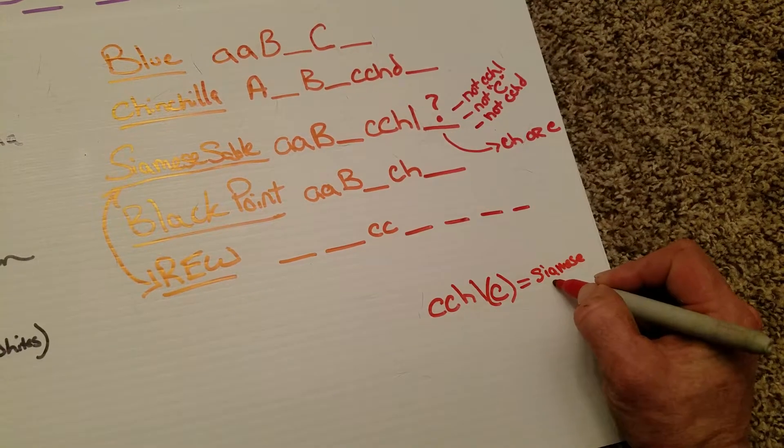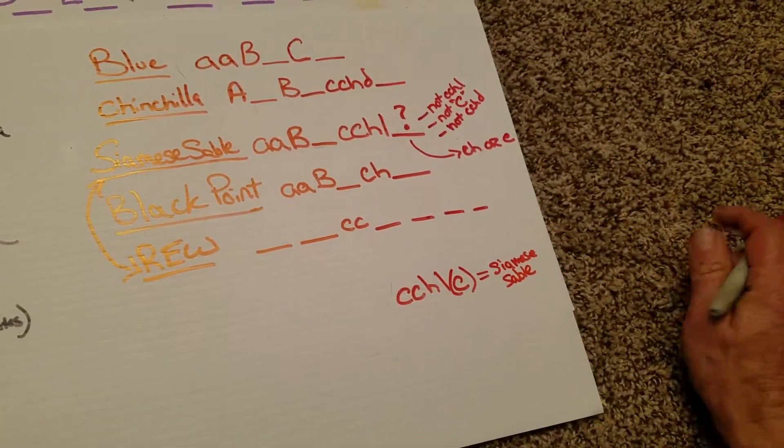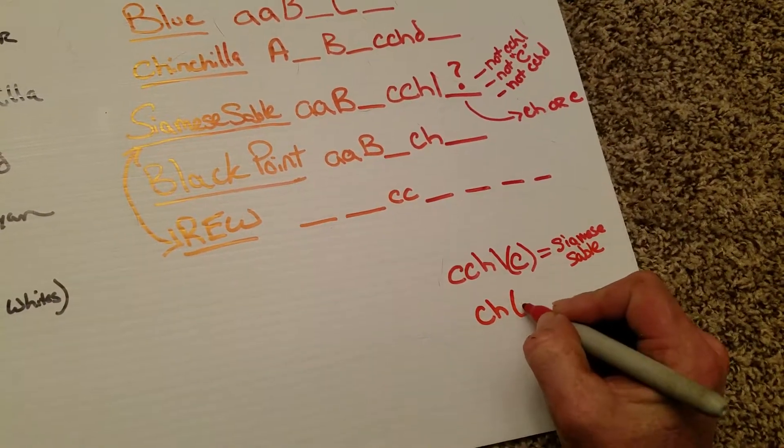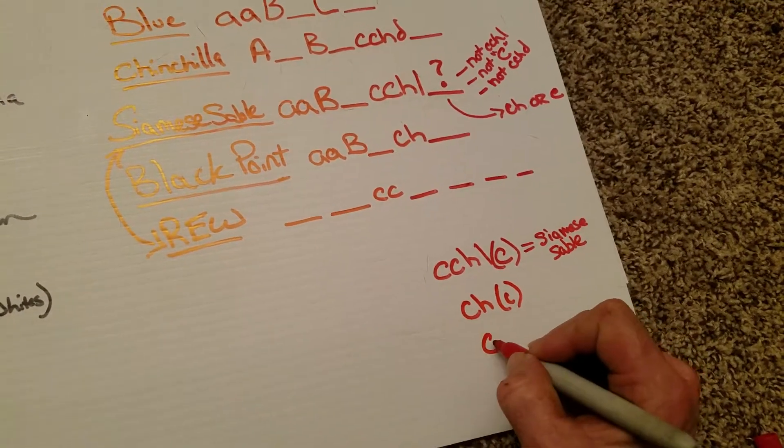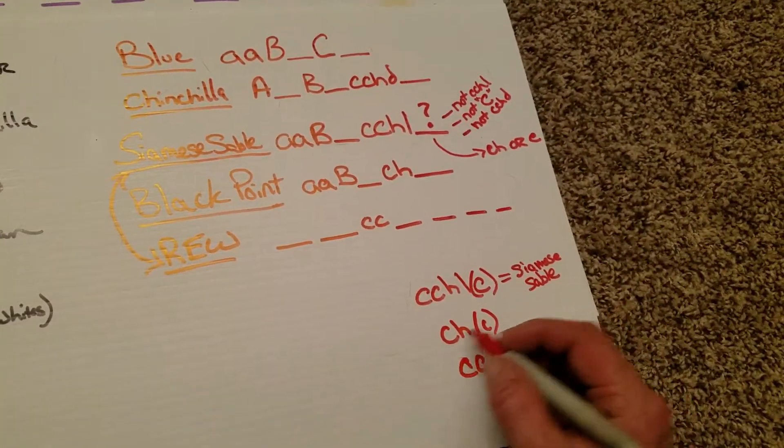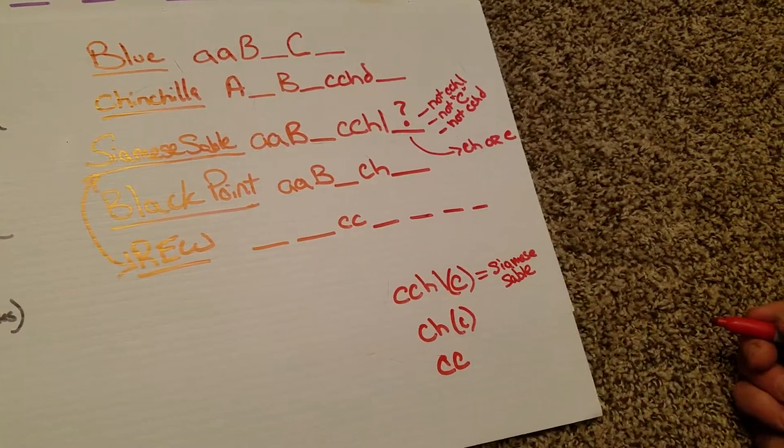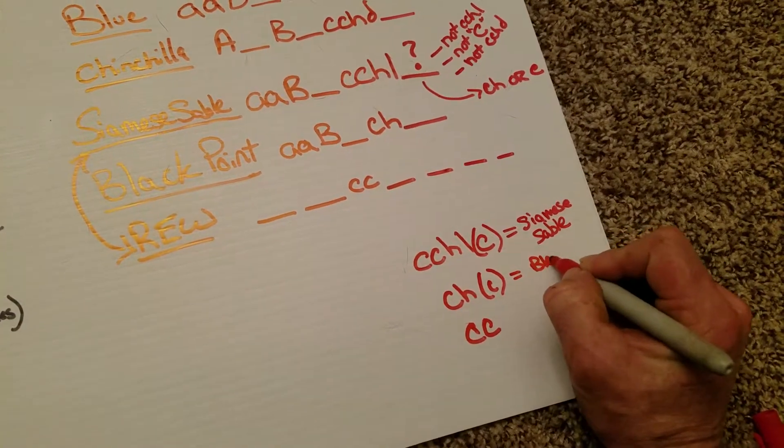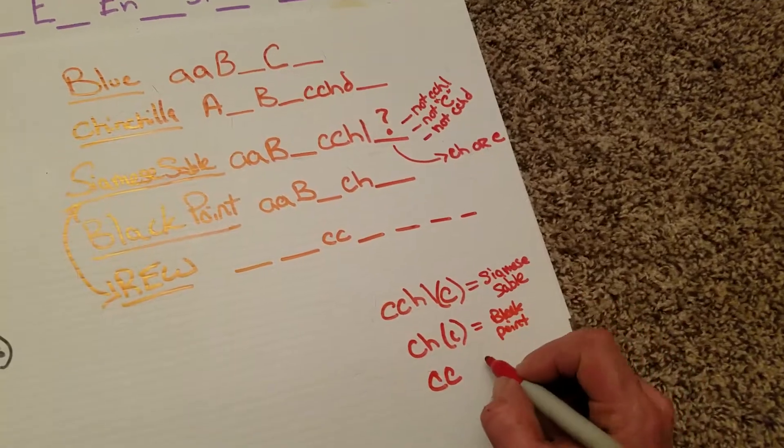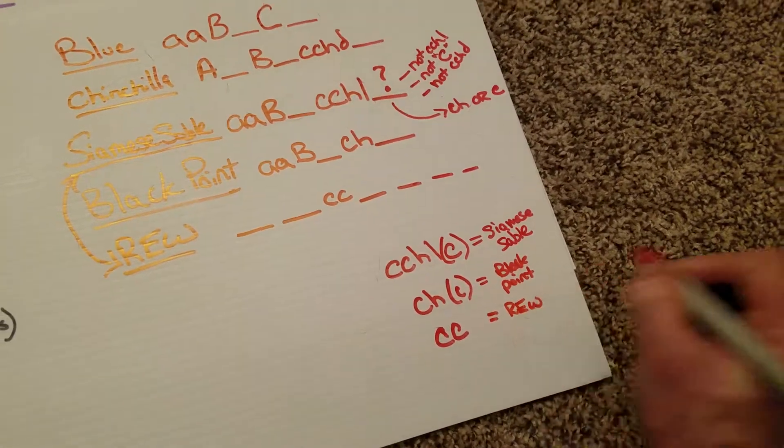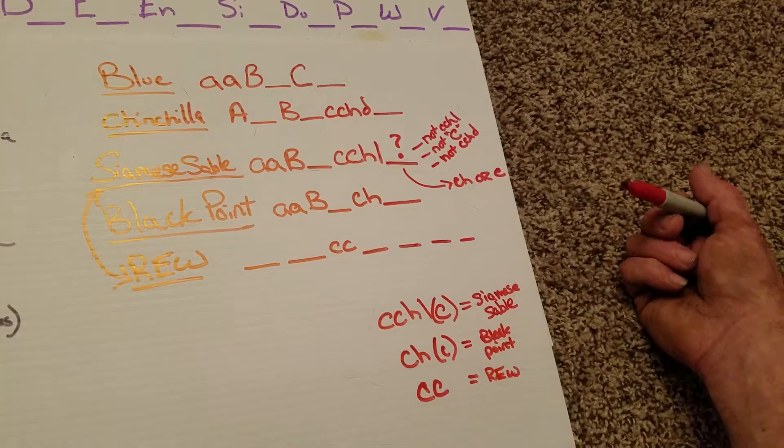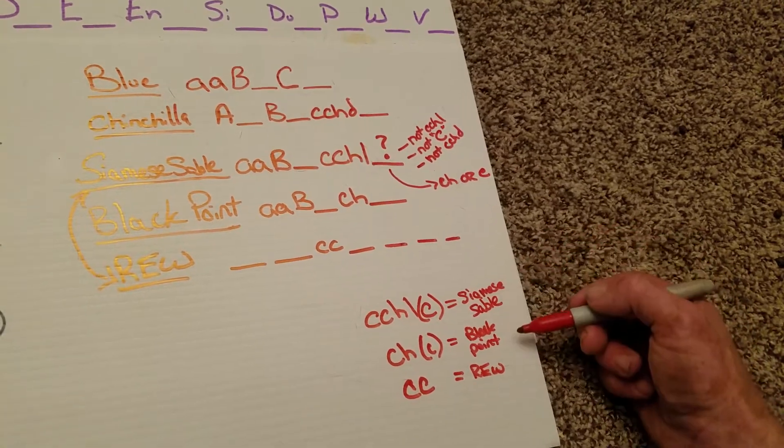Okay, if we were to get something hiding here, or let's say it was hiding a lowercase c and a lowercase c, maybe we get this combination. Well, how would we know that we got that combination? Well, if we get that combination, we're going to get a black point or a blue point, we're going to get a pointed style rabbit where all the color is pushed to the points: the face, the ears, and the feet. And if we happen to get a ruby-eyed white out of that combination, we know then that this rabbit was carrying ruby-eyed white here.